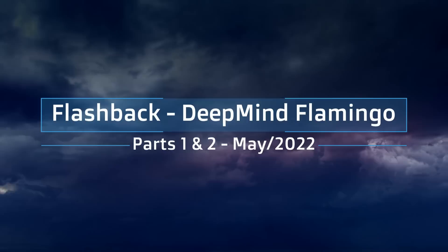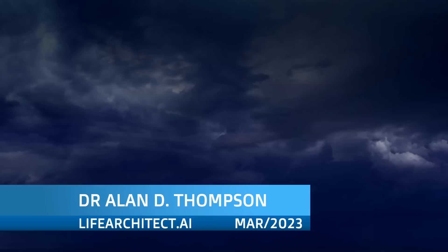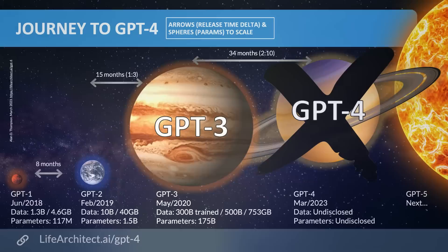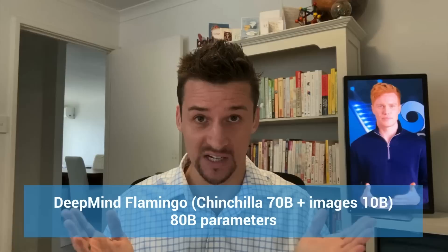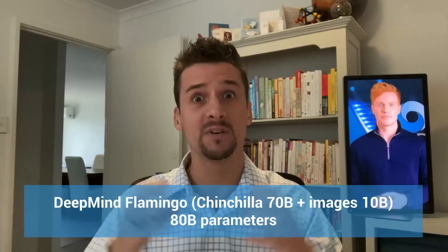While we wait on OpenAI to release the visual part of GPT-4, here's a flashback to May 2022 when DeepMind announced Flamingo, also a visual language model with very similar capabilities to GPT-4. DeepMind out of London released this model with 80 billion parameters — 70 billion from Chinchilla, the large language model, plus 10 billion from images. I quite like the name: we've gone Gopher, Chinchilla, Flamingo.